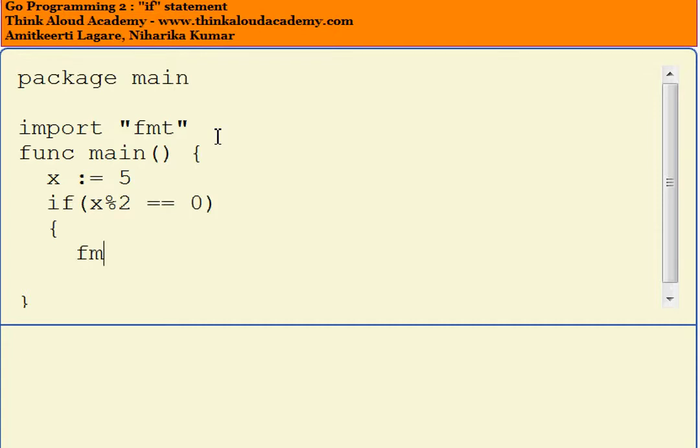Let's say fmt.println x is an even number. So, again you don't need a semicolon. And I'll close the braces. So, let me actually write an even number. So, this actually checks whether the number is even or not.